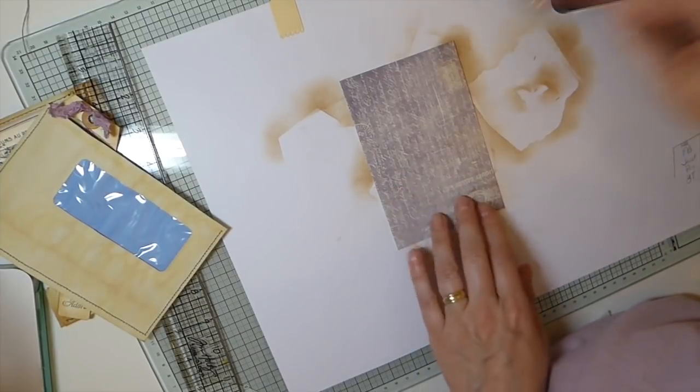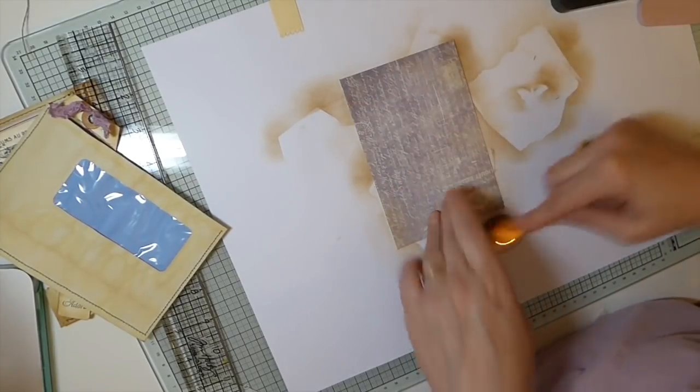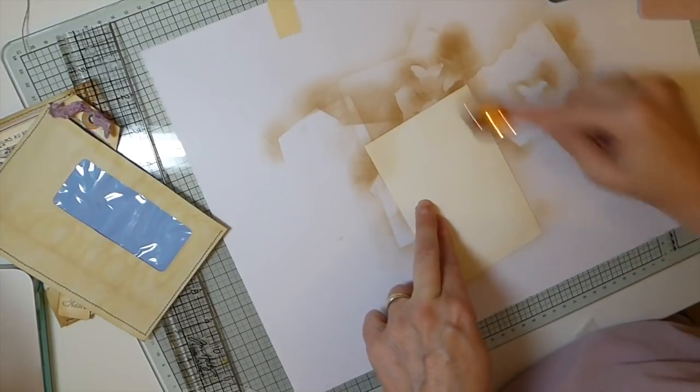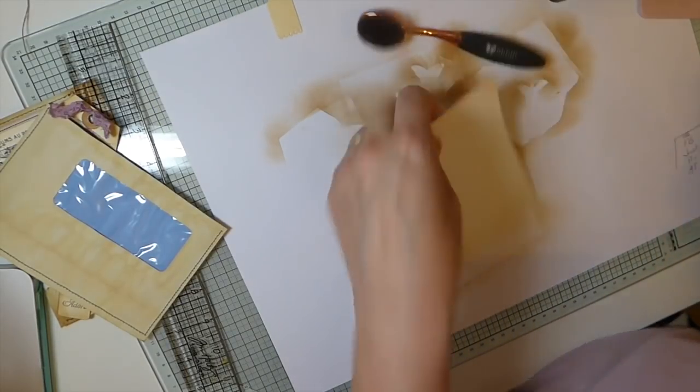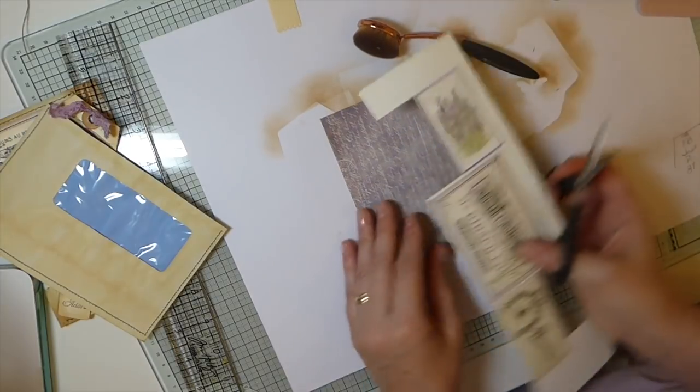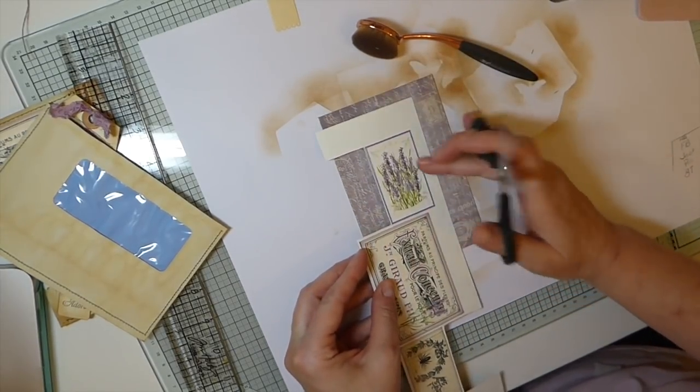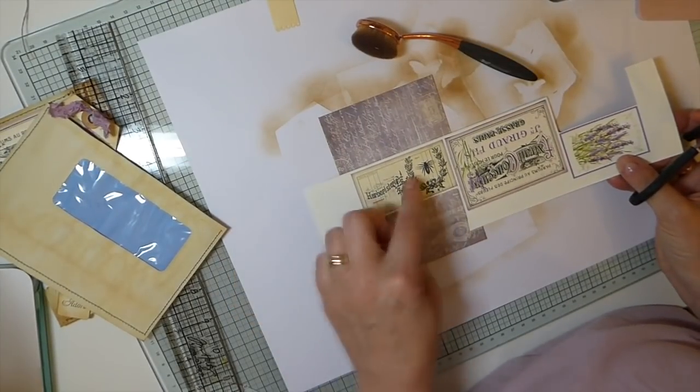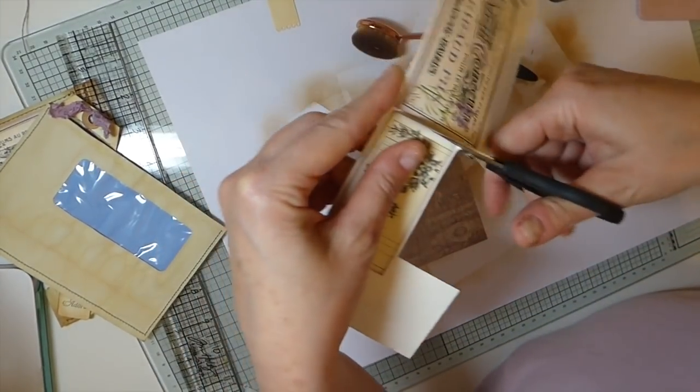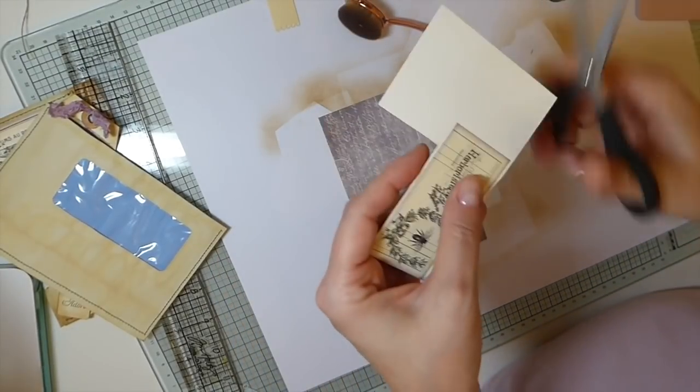Okay, so let me go ahead and start inking this. So this is just going to be a journal card that sits inside and a peek through, which is gorgeous. Let's make a little focal point for this. I'm just going to keep it really simple. I'm just going to put, actually I'll put this bee.